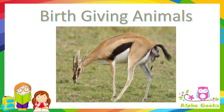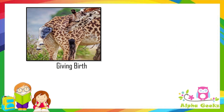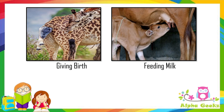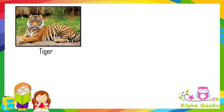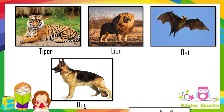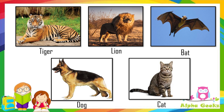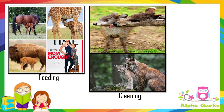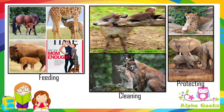Birth-giving animals: some animals do not lay eggs but give birth to young ones that feed on their mother's milk. Such animals are called mammals. Tigers, lions, bats, dogs, and cats are some examples of mammals. Mammals take care of their young ones by feeding them, cleaning them, and keeping them safe until they are independent.